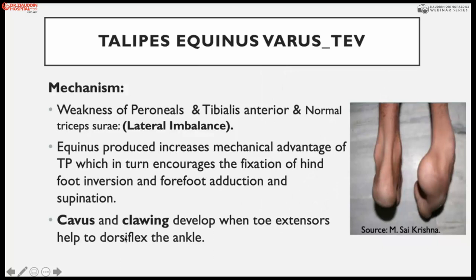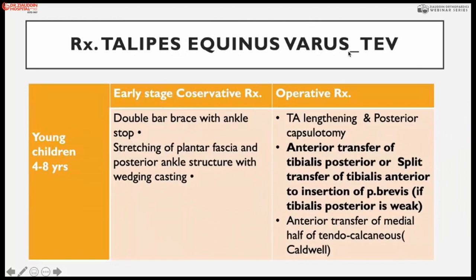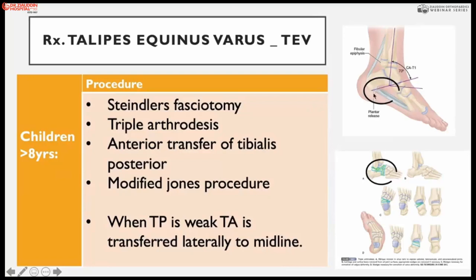For talipes equinovarus in young children four to eight years, initial treatment is double bar bracing, stretching of the plantar fascia, and wedge casting for posterior ankle contracture release. In the later operative stage, tendo Achillis lengthening, posterior capsulotomy, and anterior transfer of tibialis posterior or split transfer of tibialis anterior to the lateral part with insertion into the peroneus brevis tendon and anterior surface of the distal half of tendo Achillis are performed. For children over eight years, standard release, triple arthrodesis, and tibialis posterior transfer to the dorsum are performed.